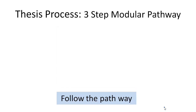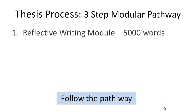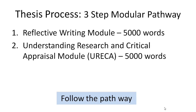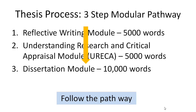The process has been divided into three modules. The first module is a reflective writing module and will be about five thousand words. This presentation will look at the reflective writing module first, and then later we will discuss the understanding research and critical appraisal module, and nearer the time we will discuss how both of these fit into the dissertation module of around ten thousand words.